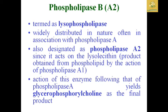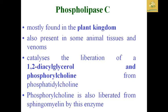Phospholipase B, also called phospholipase A2, is termed lysophospholipase because it is widely distributed in nature, often associated with phospholipase A. It acts on lysolecithin, which is the product obtained by the action of phospholipase A. The remaining lysolecithin is acted upon by phospholipase A2, and the final product in this process is glycerophospholipid.